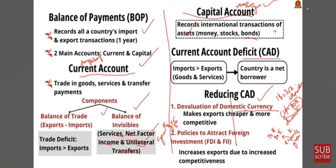Secondly, we can adjust suitable foreign direct investment policies, which can increase exports due to increased competitiveness. Special economic zones substitute imports and promote exports — they produce goods that we actually import and also export to other countries. These special economic zones can be encouraged by changing the policies of foreign direct investment and foreign portfolio investment. So these are two ways to address the current account deficit.